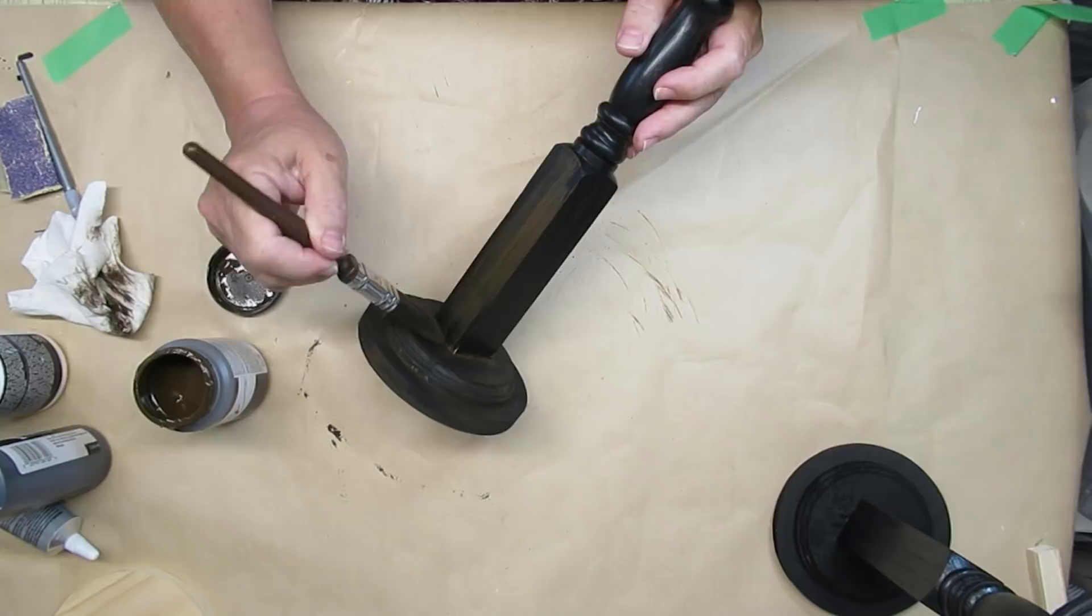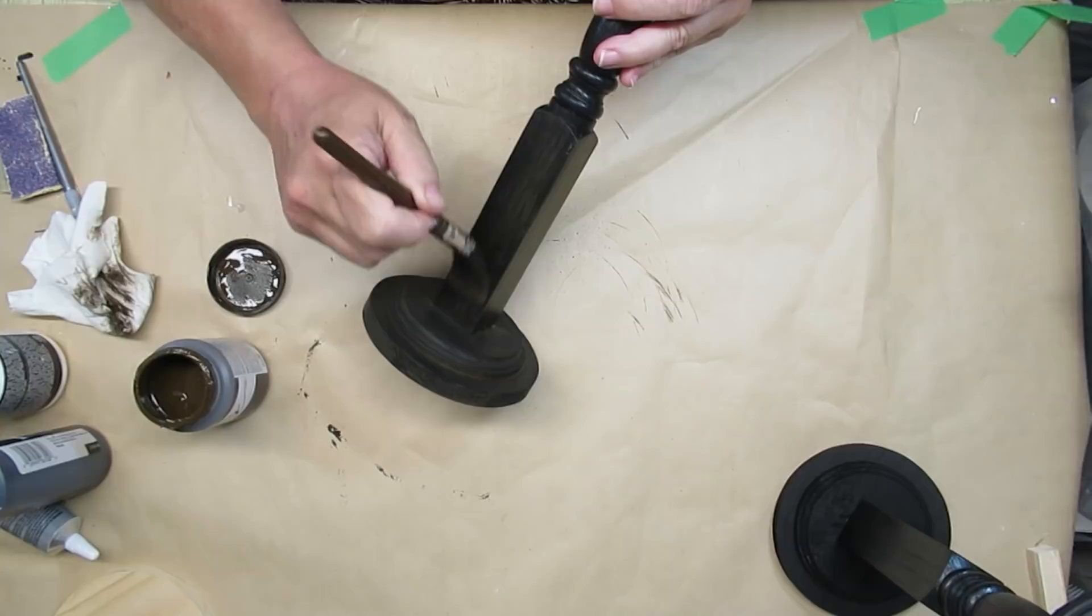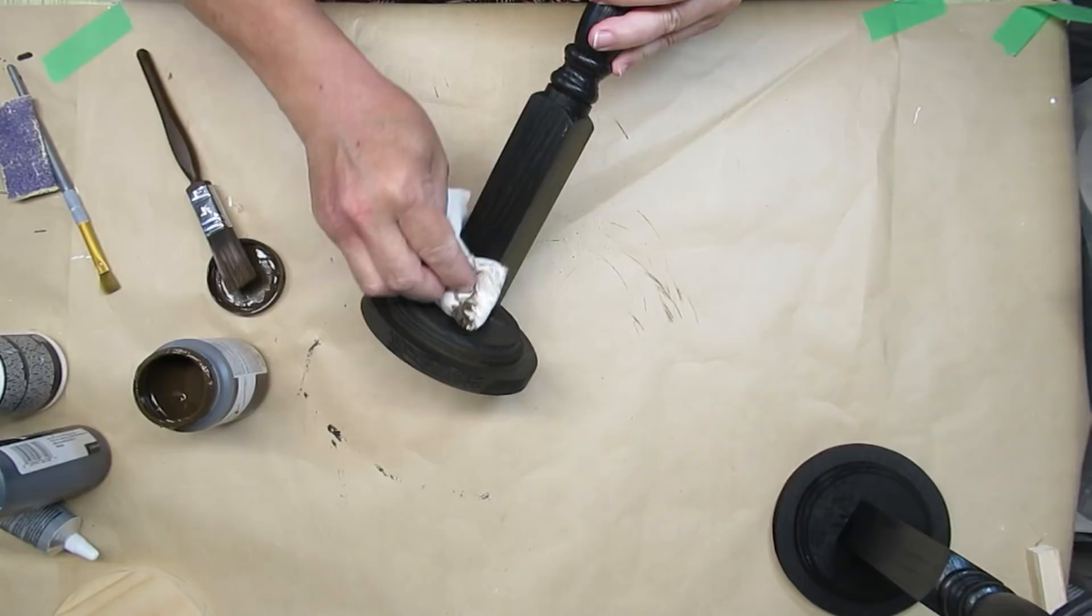When it came to doing the spindle portion, I did get a little bit of the black paint coming off when I was wiping off the antiquing wax. I'm okay with that because I thought it gave it more of a rustic look.